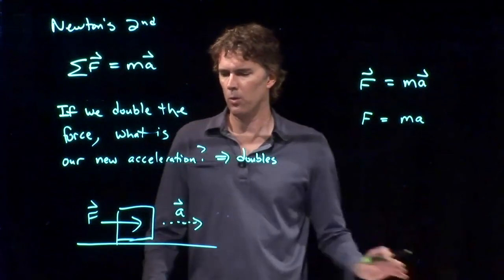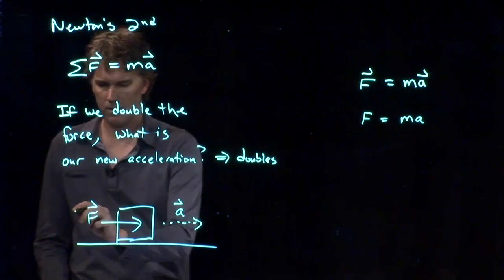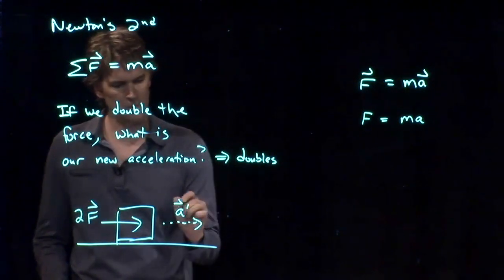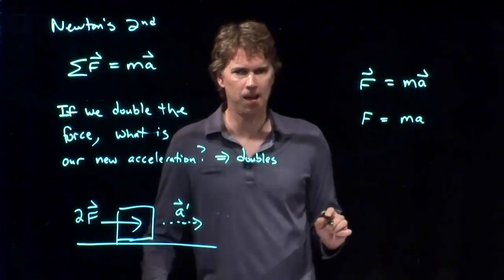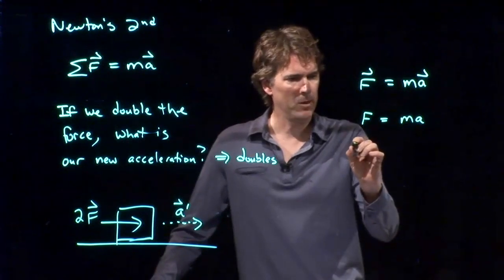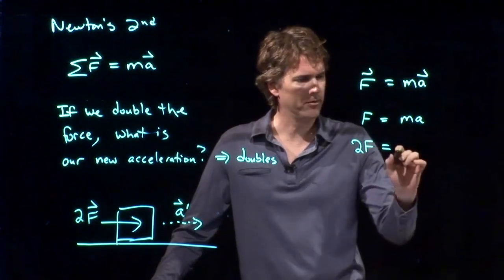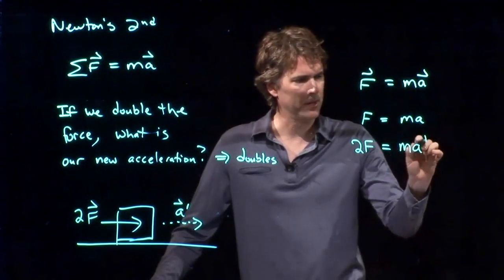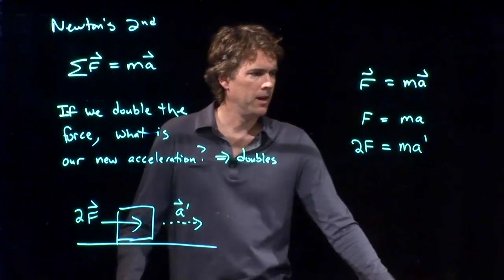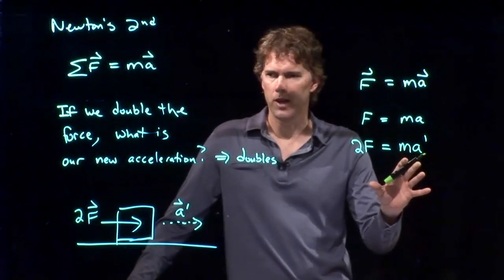Now, if I repeat the experiment and I double the force and I call that thing A prime, how do I rewrite this equation? Well, I double the force, so 2F equals m times A prime. And now I want to solve this thing for A prime.